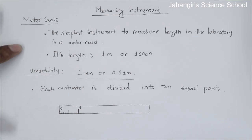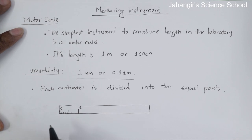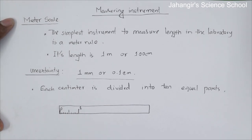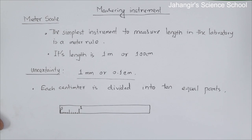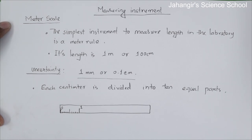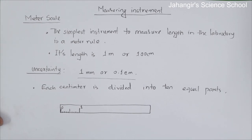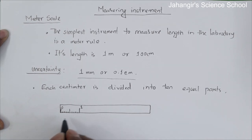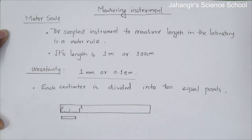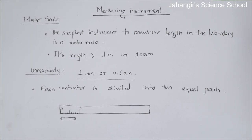To measure the length of a rod or stick with a meter scale, one end is placed at zero or another convenient mark of the scale. We want to measure the length of this rod. The reading of the mark that coincides with the other end of the rod is taken, and the difference between the readings at the two ends gives the length of the rod.